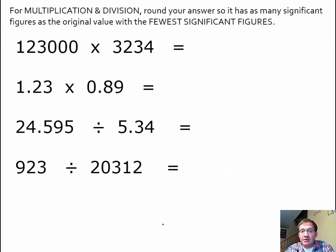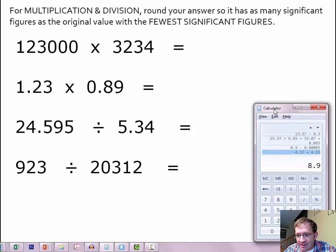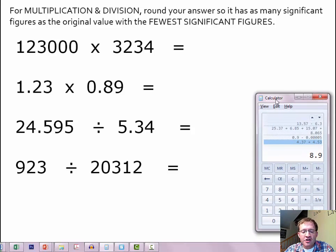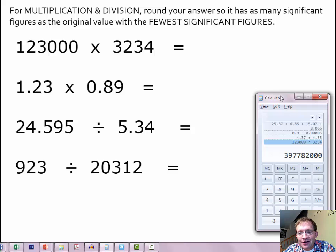Let's look at a couple of other examples. Here's 123,000 times 3,234. I'll grab my calculator and put the numbers on screen so you can see the math. 123,000 times 3,234 gives us an answer of 397,782,000. That's a bunch — 3, 9, 7, 7, 8, 2, 0, 0, 0. That's got a lot of significant figures in it.